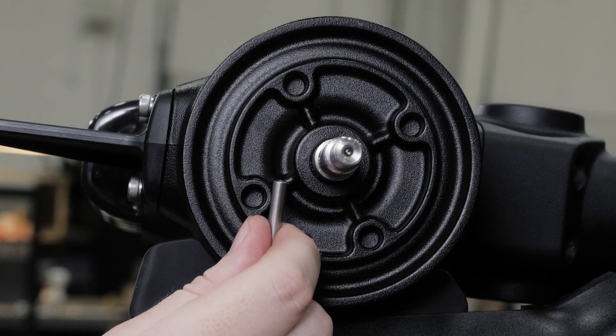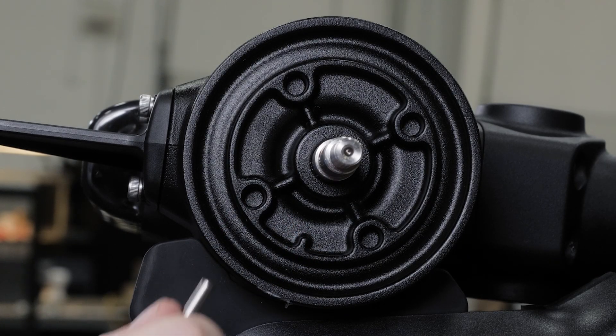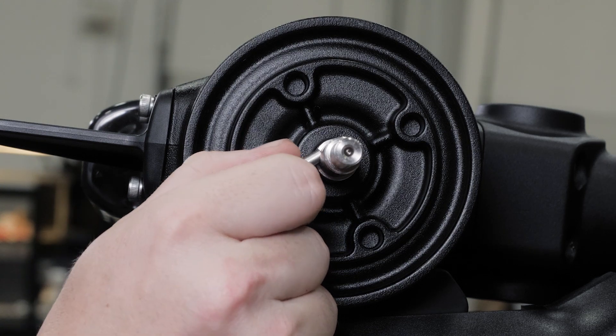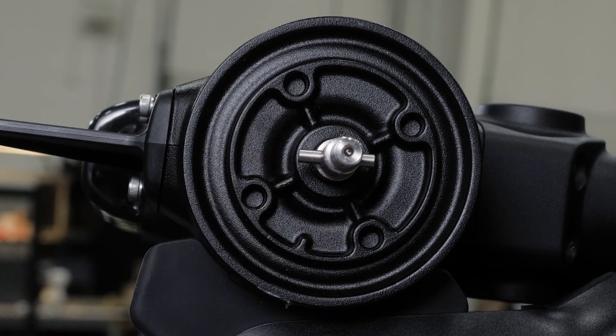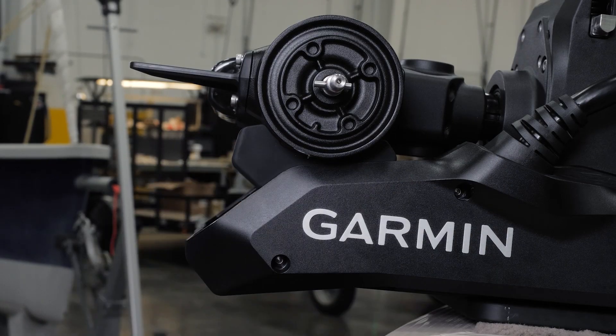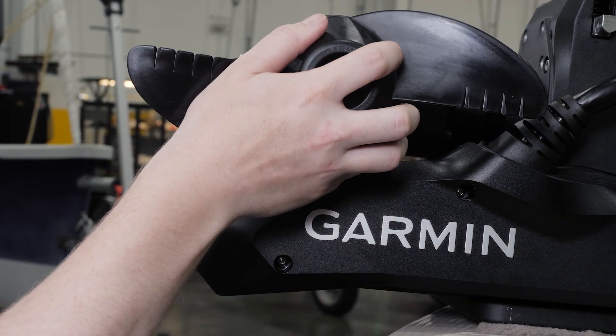Next we will install the propeller. Rotate the motor shaft to orient the pin horizontally so it's less likely to fall out during installation. Insert the pin through the propeller motor shaft. Align the channel on the inside of the propeller with the pin and slide the propeller onto the motor shaft.